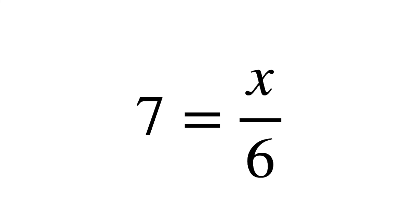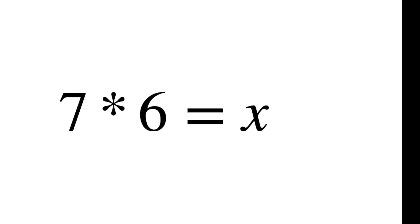But if you move those symbols around using the rules of algebra, you end up with 7 times 6 equals x, and that's much easier to see. That's the point of algebra. Both of those statements mean the same thing, but they look different.